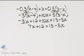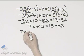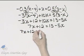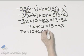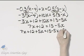I'm going to add 5x to both sides. So here's my left side, 7x plus 12, I'll add 5x. Here's my right side, and I'll add 5x.